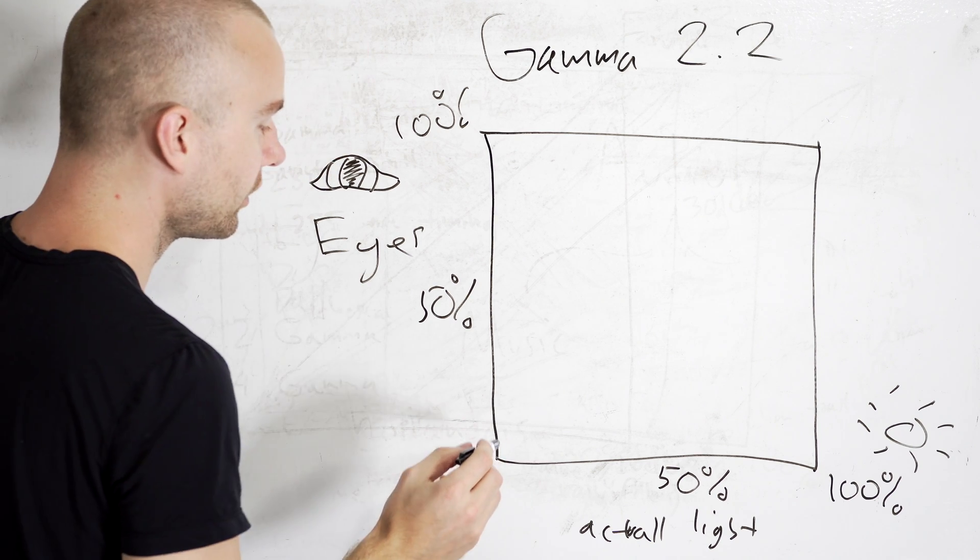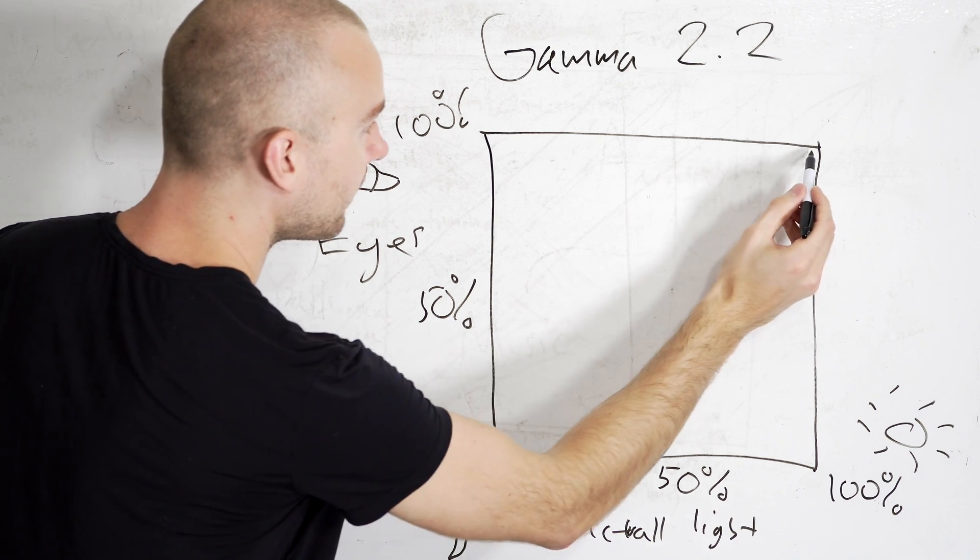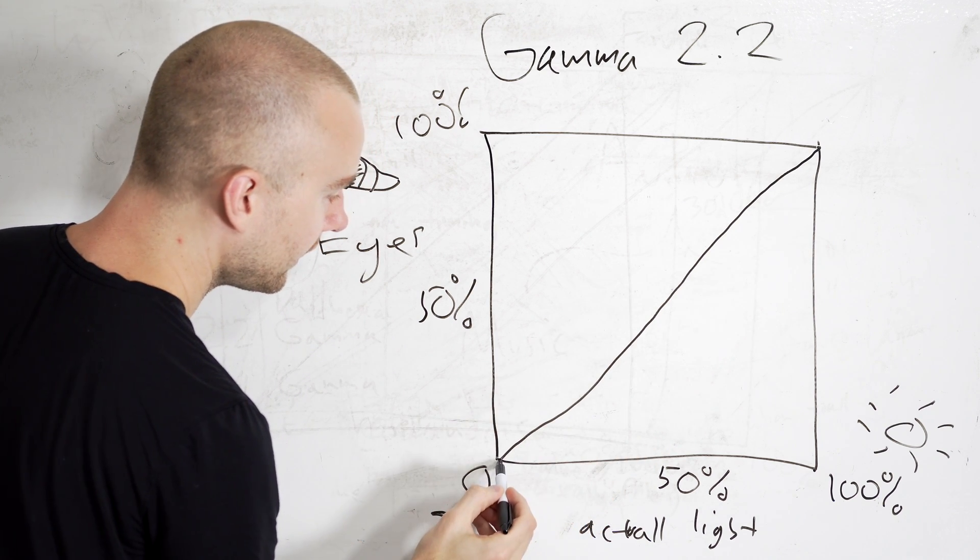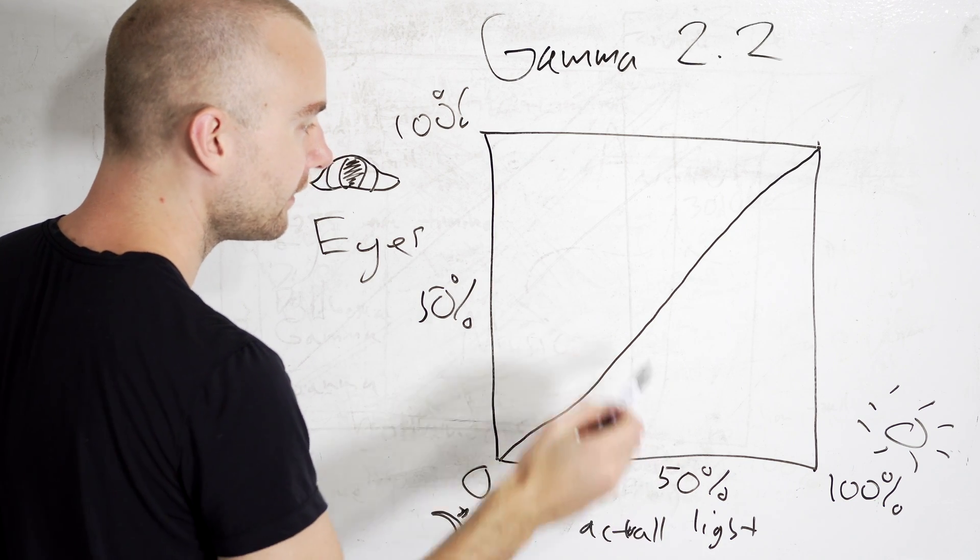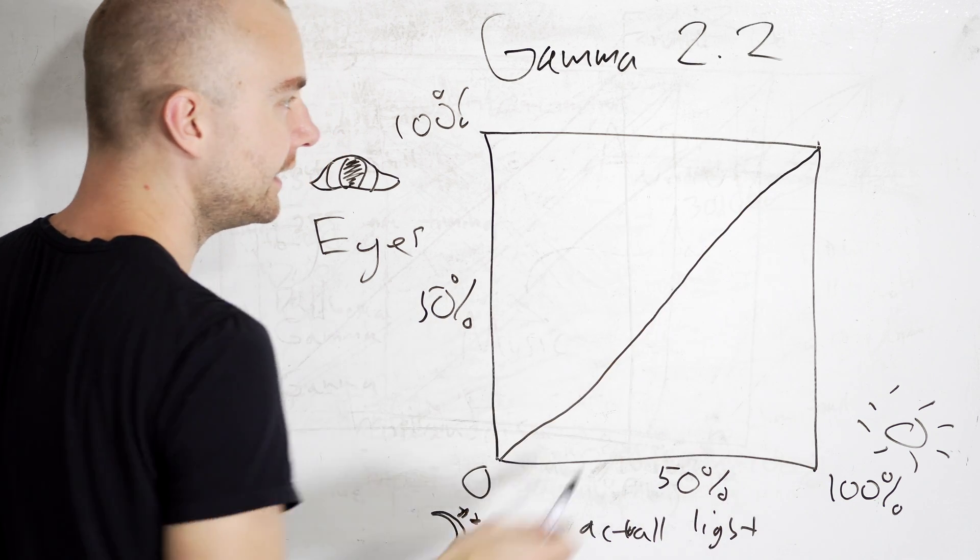So the camera sensor will see everything linearly. Meaning zero light is zero light, 50% light is 50% light, 100% light is 100% light.